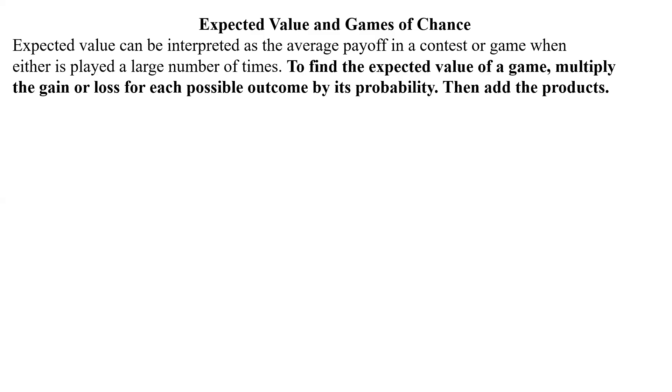Now, to find the expected value of a game, we basically are multiplying the gain or loss for each possible outcome by its probability, and then we add up the products.